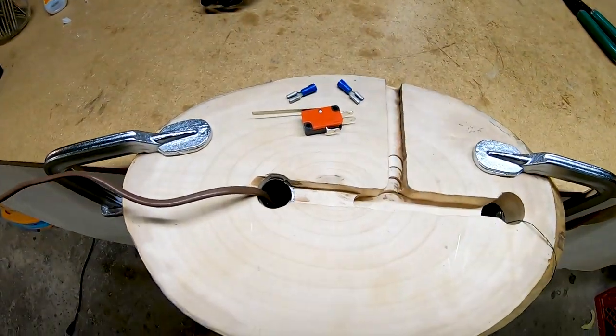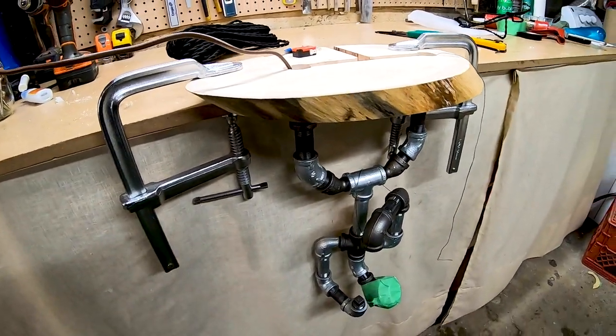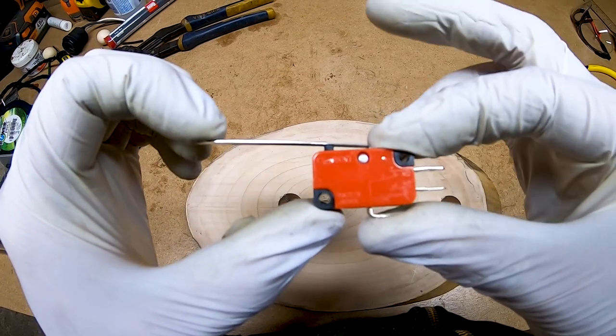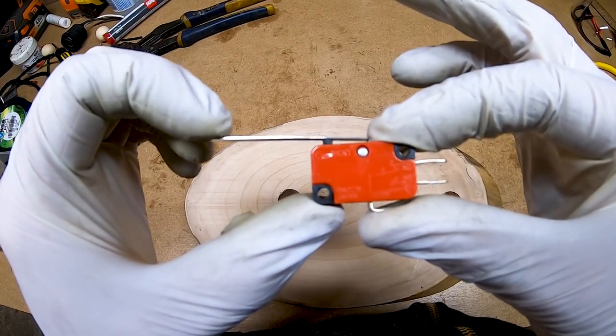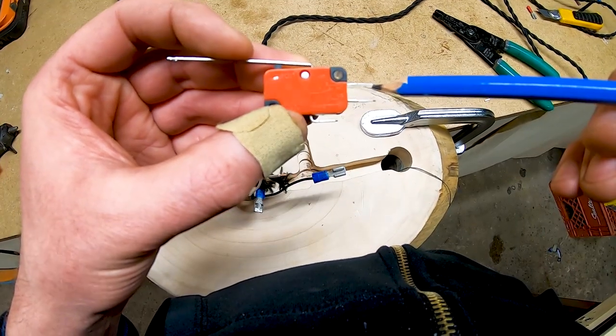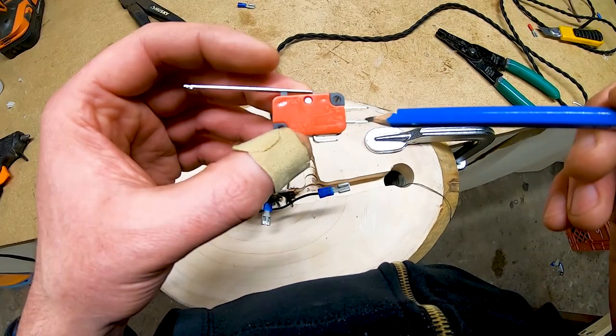It's now time to wire in the switch. To help with this, I clamped the base upside down on the edge of my work surface. The switch we are using is called a micro switch. It's a momentary switch that is activated with very little physical force. It has three terminals: one is connected to a normally open circuit, one is connected to a normally closed circuit, and the third one is for your common connection.